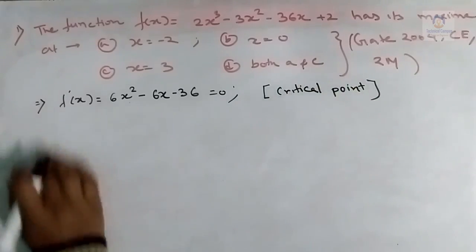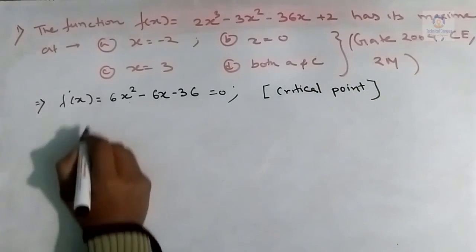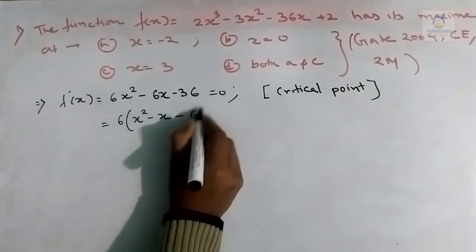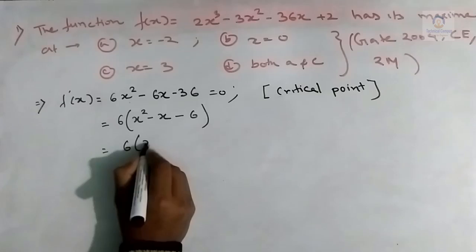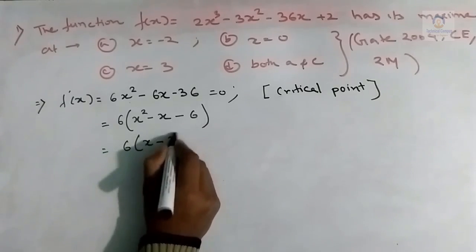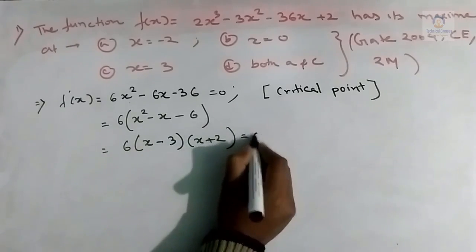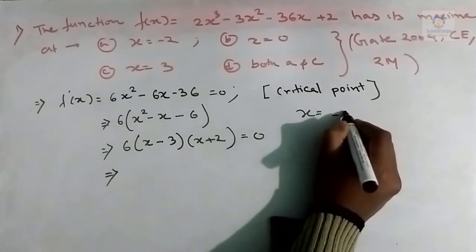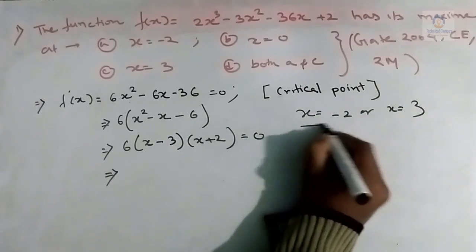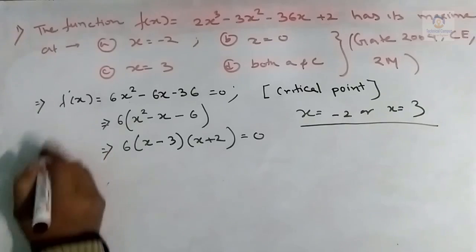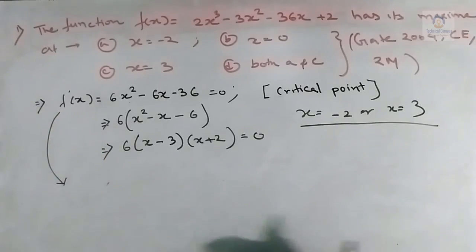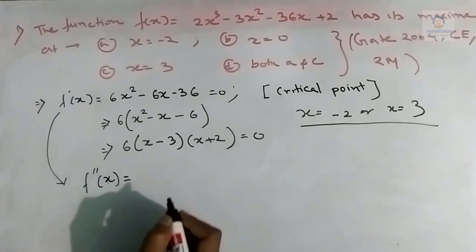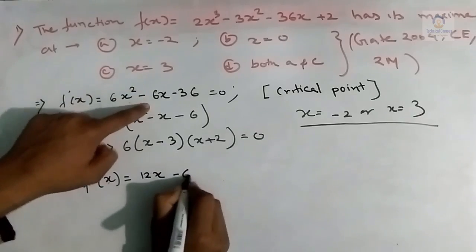Solving f'(x) = 0: taking 6 common gives x² - x - 6 = 0, which factorizes as (x - 3)(x + 2) = 0. So the critical points are x = -2 and x = 3. The second step is to find f''(x), the second differentiation: f''(x) = 12x - 6.